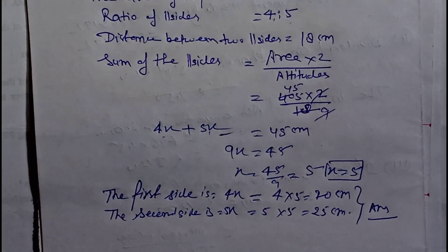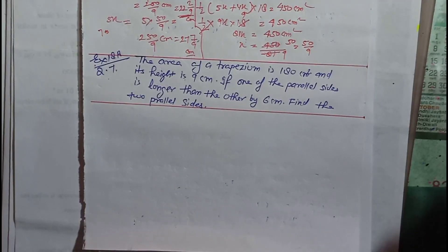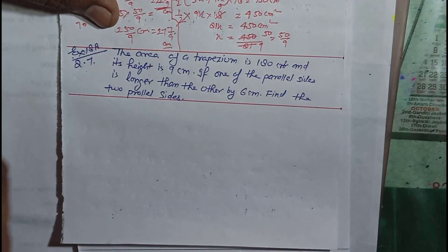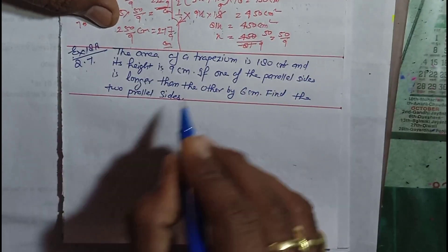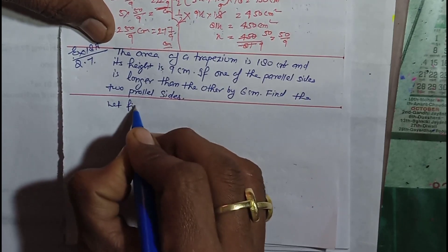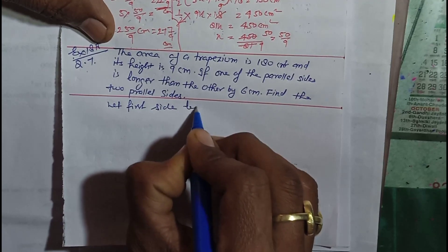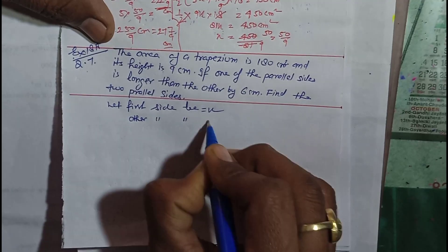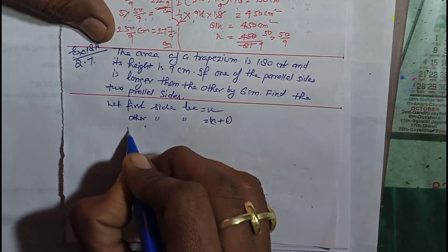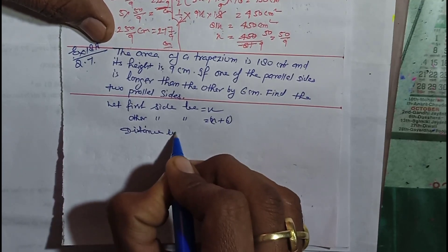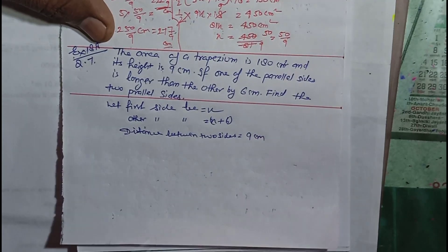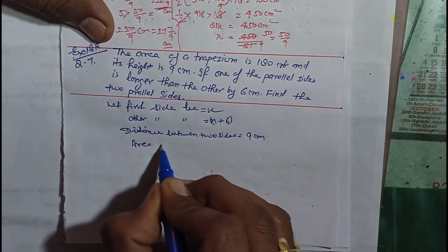Is question ko aap bahut ache se samajh chuke honge. Ab question number 7 ko samjhte hain. Question 7 bahut easy sa question hai. Question mein likha hua hai ki the area of a trapezium is 180 cm square and its height is 9. If one of the parallel sides is longer than the other by 6. To sabse pehle let the first side be equal to x, then other side is equal to x + 6. Distance between two sides is given as 9 cm.